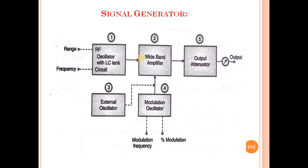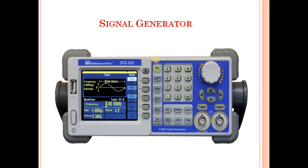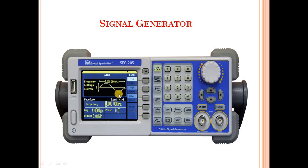This is the internal circuitry of the signal generator, and this is the actual photograph of the signal generator. It can produce sine wave, ramp wave, pulse wave, and noise signal. You can also select the store and recall button, as well as the help button. The frequency is also displayed.